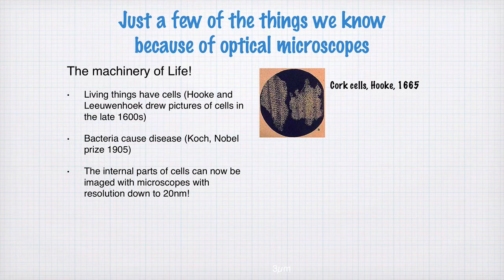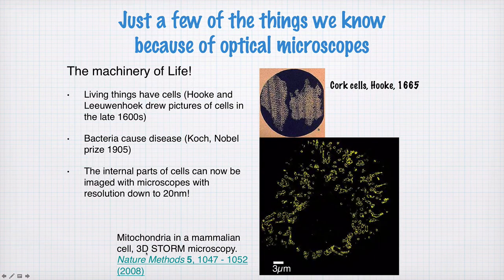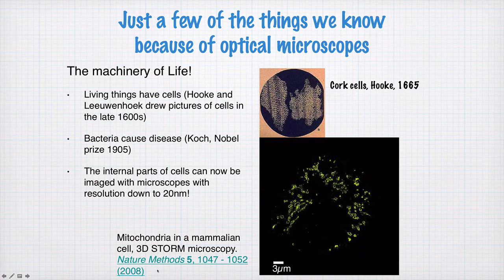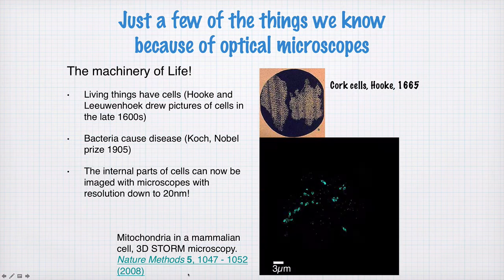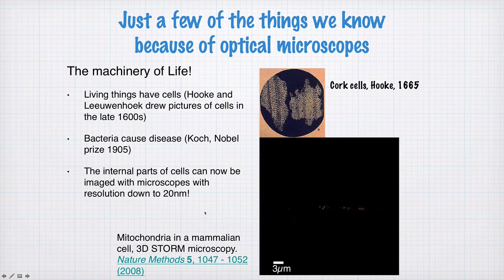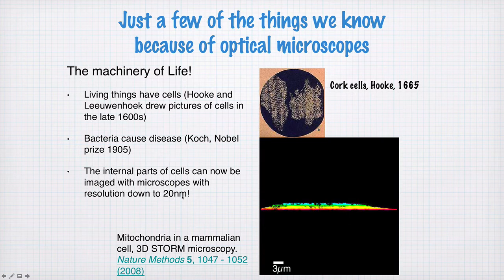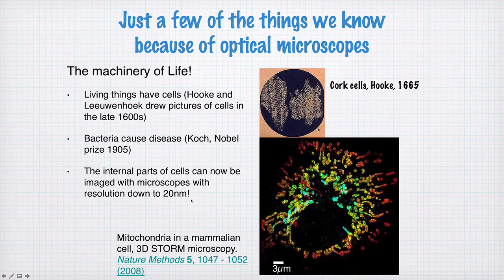We know that the inside of cells are full of even more detailed micromachinery, and we can now image the insides of cells with resolutions down to 20 nanometers. This is an example of microscopy done using a technique called 3D-STORM. This is a really advanced kind of microscopy, and a resolution of 20 nanometers is something that if you asked 20 years ago whether this was going to be possible, people would have said you're crazy. Yet optical microscopes are now imaging things down to a fraction of the optical wavelength — around 500 or 600 nanometers — so we're talking about a tenth or twentieth of that wavelength in resolution.